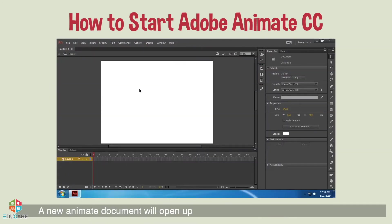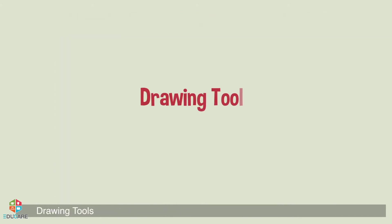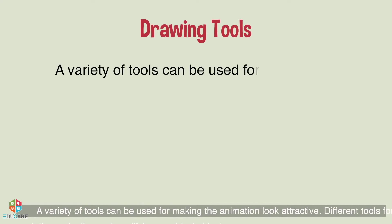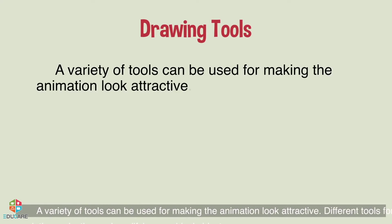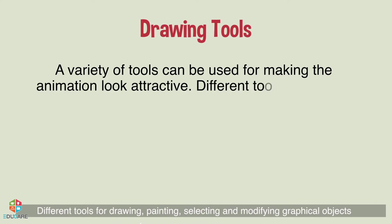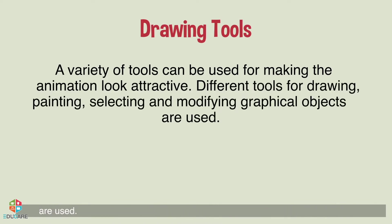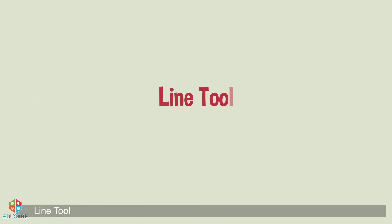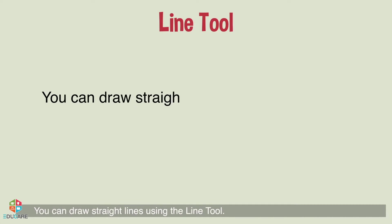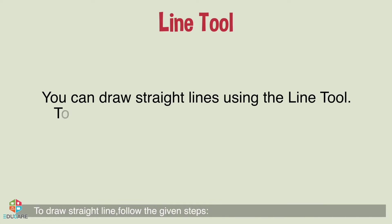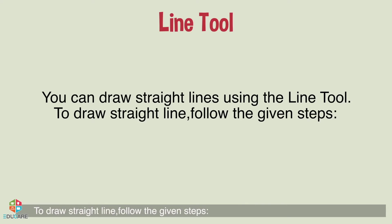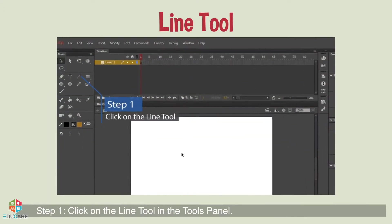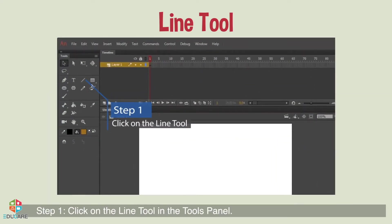Drawing tools: a variety of tools can be used for making the animation look attractive. Different tools for drawing, painting, selecting, and modifying graphical objects are used. Line tool: you can draw straight lines using the line tool. To draw a straight line, follow the given steps. Step 1: click on the line tool in the tools panel.